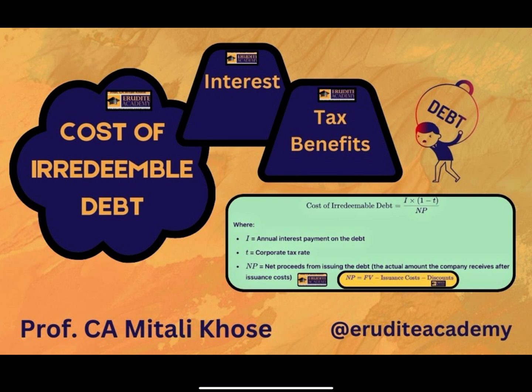While calculating cost of debt, we compare outflow with inflow. Whatever outflow we are going to incur due to opting for the debt component will come in the numerator. As we are going to get a tax shield on it, we will reduce that amount from interest. We will compare this amount by dividing it by the net proceeds received from this particular debt venture. While issuing this debt, if there are any costs associated with this particular issue, then that amount will be reduced from net proceeds along with any discount amount.